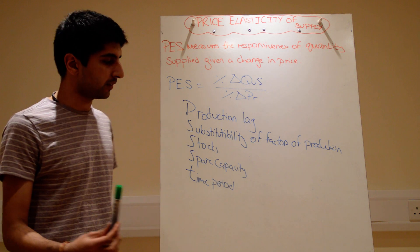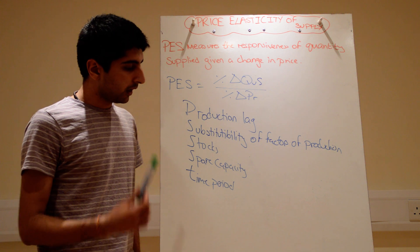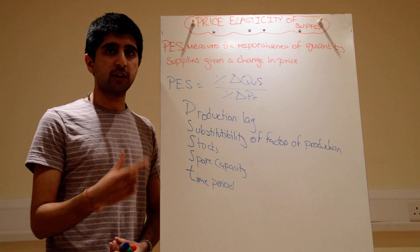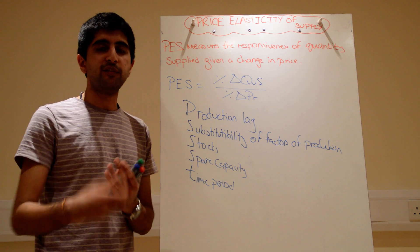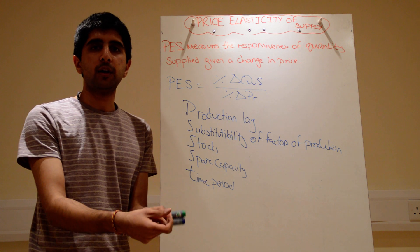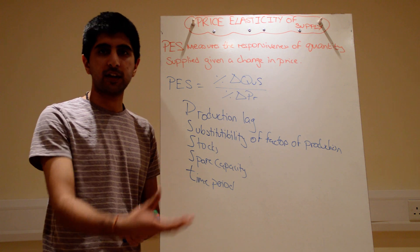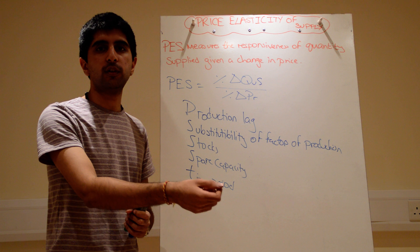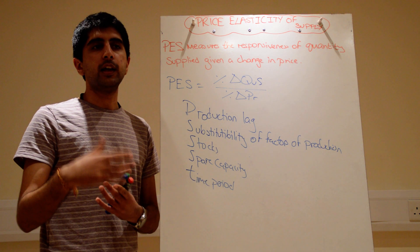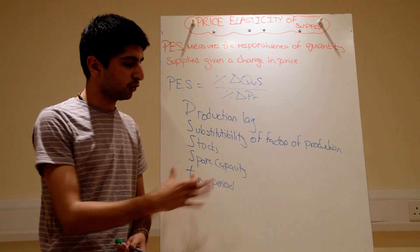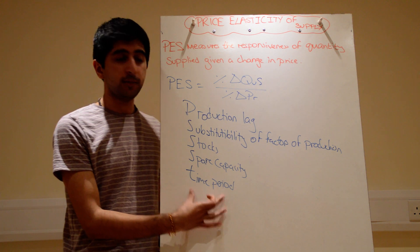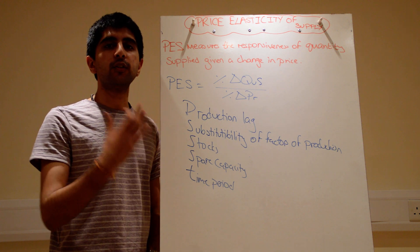Time period: in the short run, at least one factor of production is fixed, so supply will be quite inelastic because you can't expand production by acquiring new factors. In the long run, you can vary all your factors of production — buy another factory, buy machinery, hire more labour. In the short run you may not have the financial capability to do so. So in the short run, supply tends to be quite inelastic, whereas in the long run, supply is quite elastic.